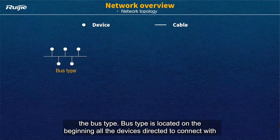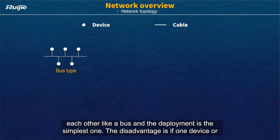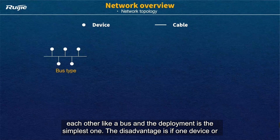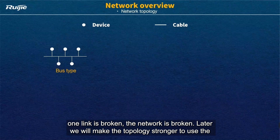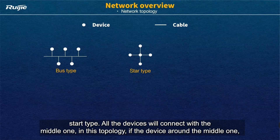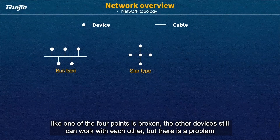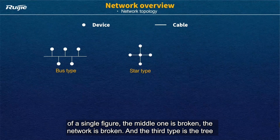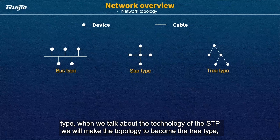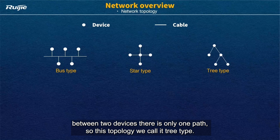The first type is the bus type, which was used at the beginning. All devices are directly connected with each other like a bus. The deployment is the simplest one, but the disadvantage is that if one device or one link is broken, the entire network is broken. Later we improved the topology to the star type, where all devices connect to a central device. In this topology, if one of the outer devices or links is broken, the other devices can still communicate. However, there is a single point of failure problem — if the middle device is broken, the network is broken. The third type is the tree type, used when we discuss STP technology. Between any two devices there is only one path, so this topology is called the tree type.